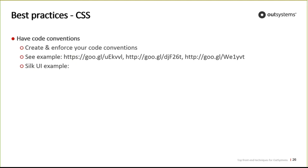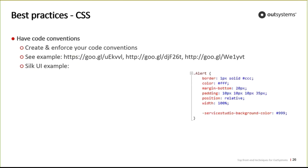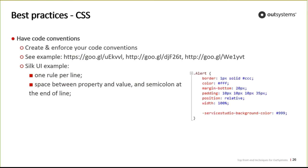In SilkyUI we also created our own code conventions. The first rule is only one rule per line — not more than one rule per line — which makes CSS much easier to read. There should be a space between the property and the value, and a semicolon at the end of the line, ensuring valid CSS and consistency. Properties are alphabetically ordered, which simplifies adding CSS and makes it clear where new attributes should be placed.